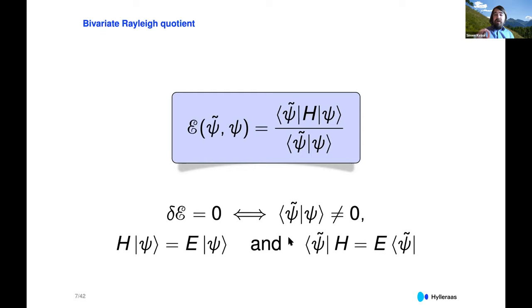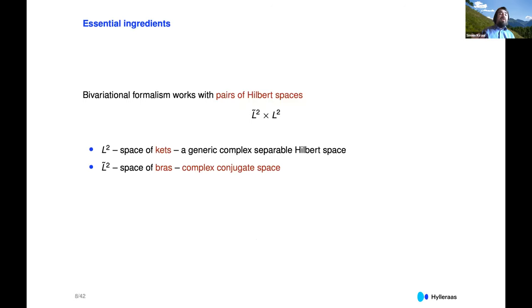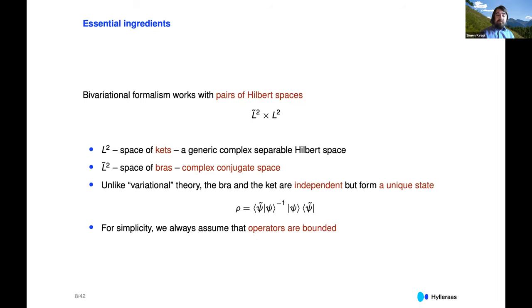This generalizes the standard Rayleigh-Ritz variational principle. The essential ingredients of bivariational formalism are first and foremost that it works with pairs of Hilbert spaces: L2 is the space of kets, some Hilbert space, and L2-tilde is a space of bras — the complex conjugate space, or if you like the dual space. Unlike variational theory, the bra and the ket are independent, but they form a unique state. So we have two wave functions, but only one state.